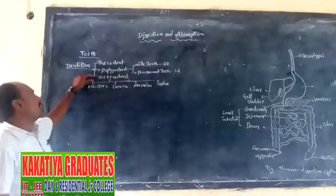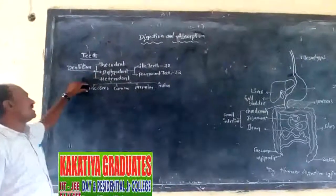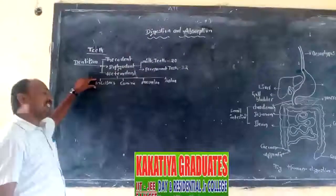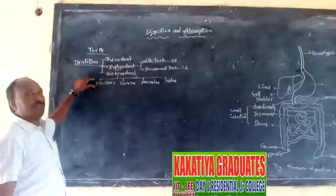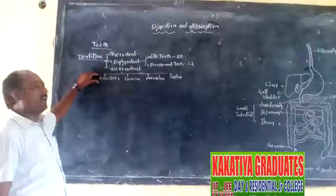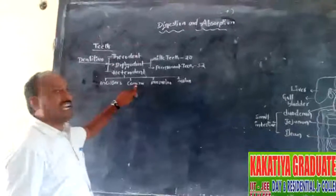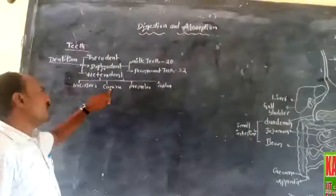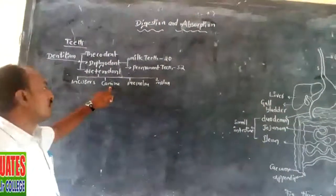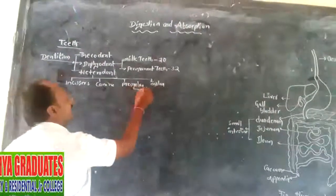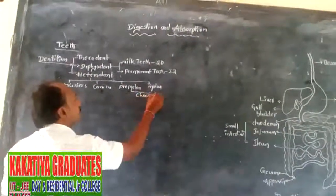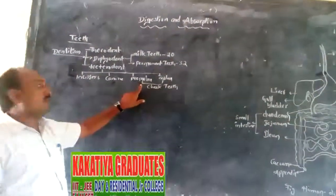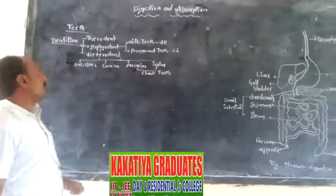These 4 types of teeth are variable in shape and variable in function, hence called heterodont. Incisors have sharpened margins for cutting food particles — they are very well developed in herbivores. Canines are dagger-like teeth used for tearing food particles, mostly developed in carnivores. Premolars and molars are called cheek teeth, helping in grinding or crushing food particles.